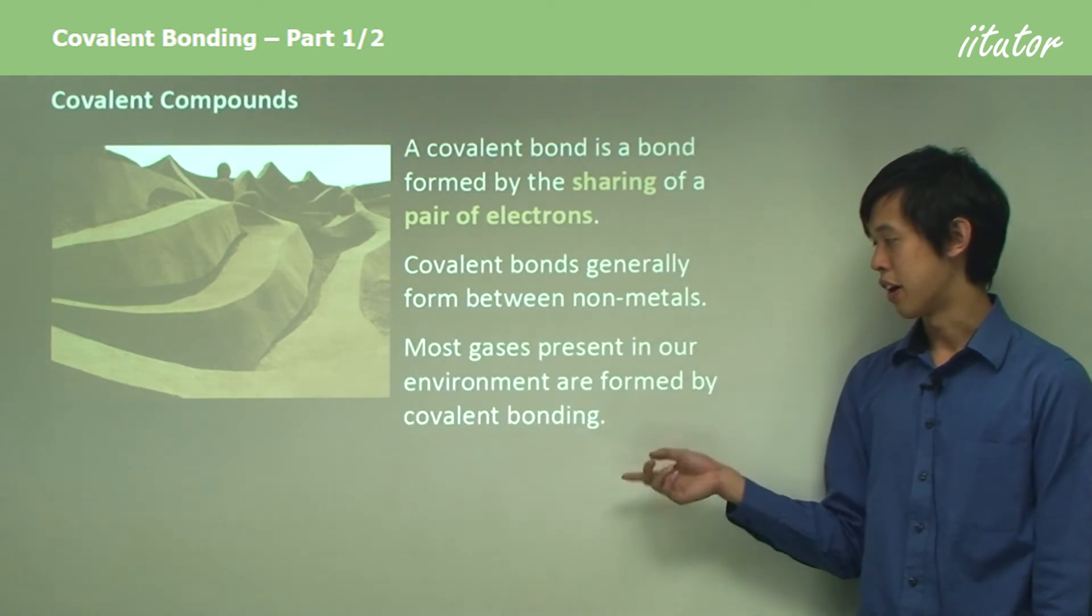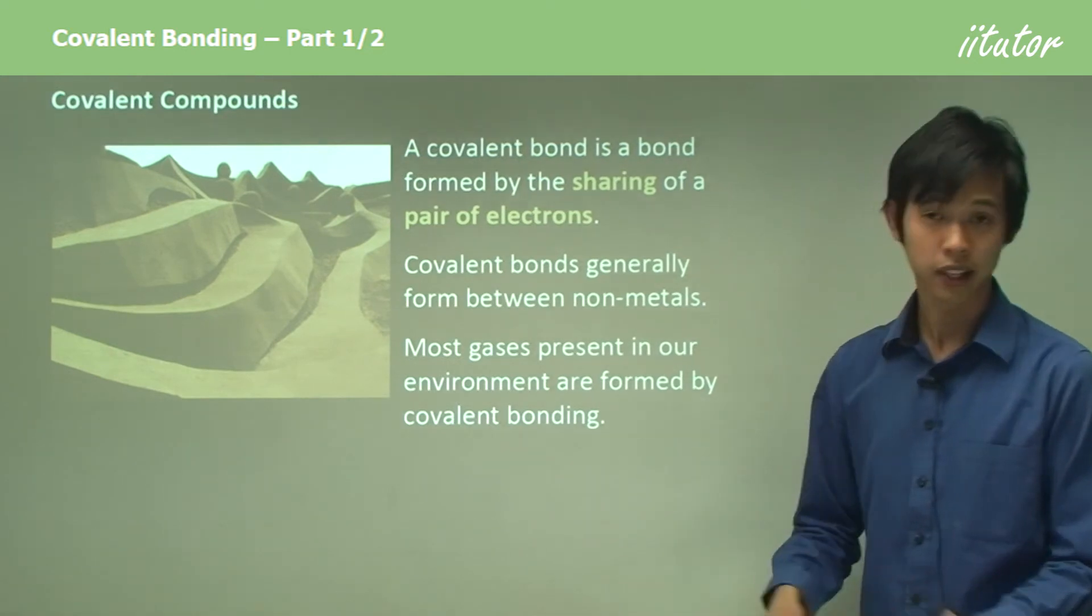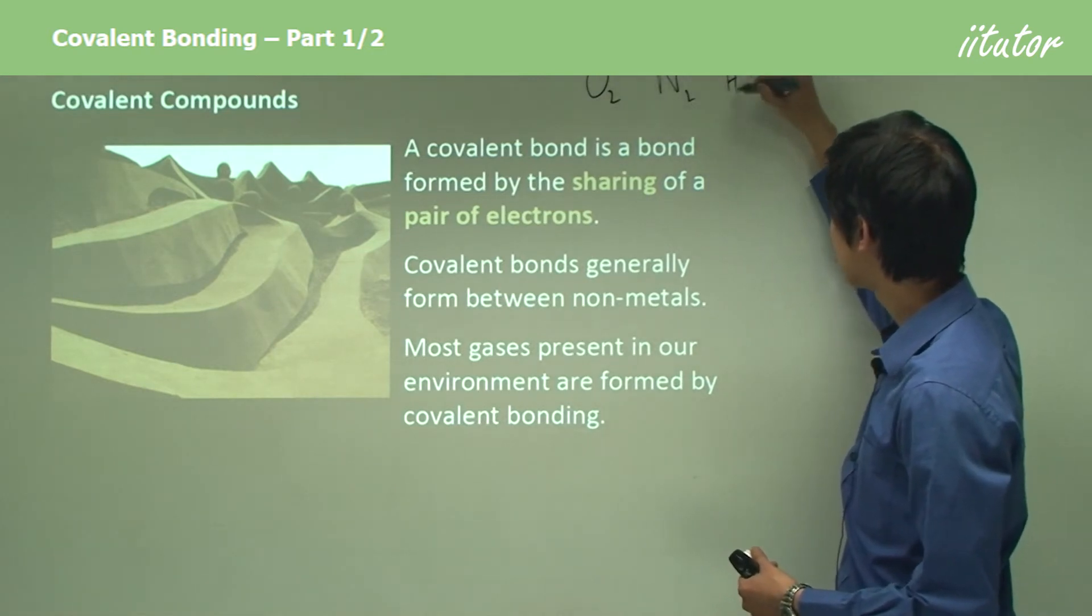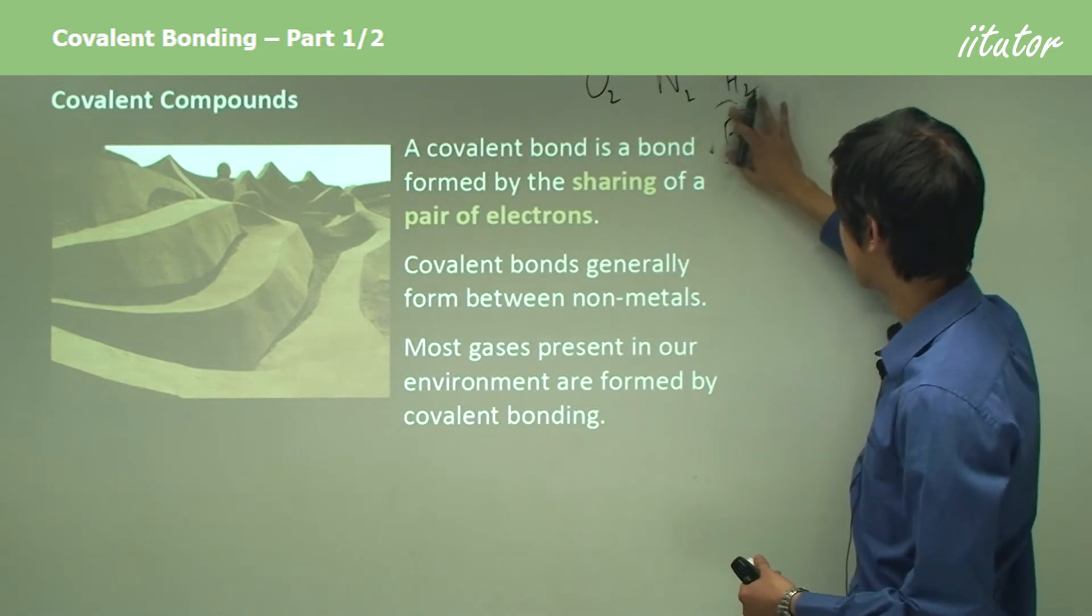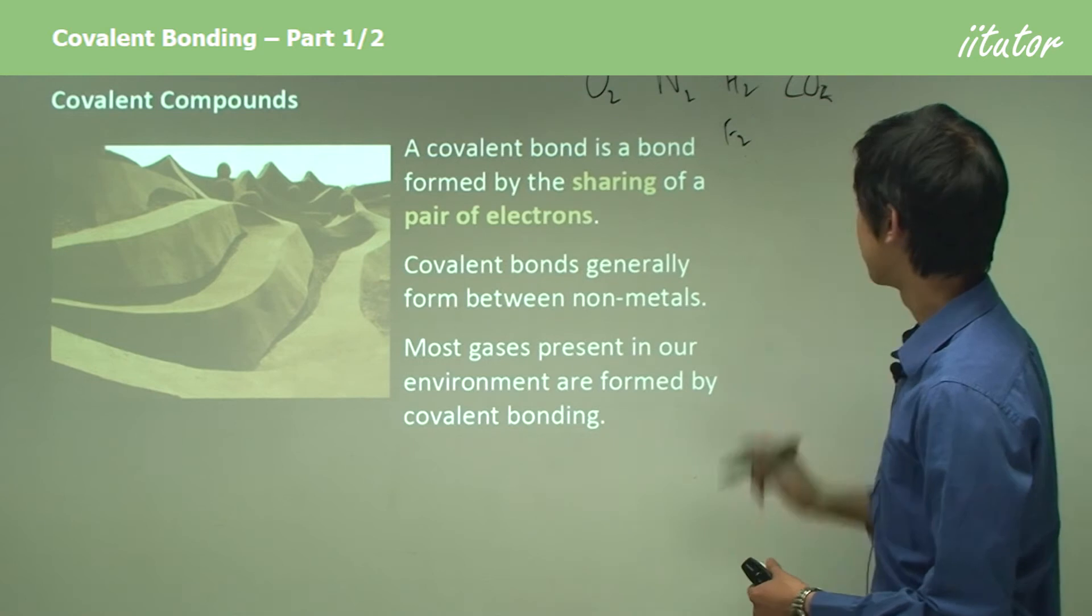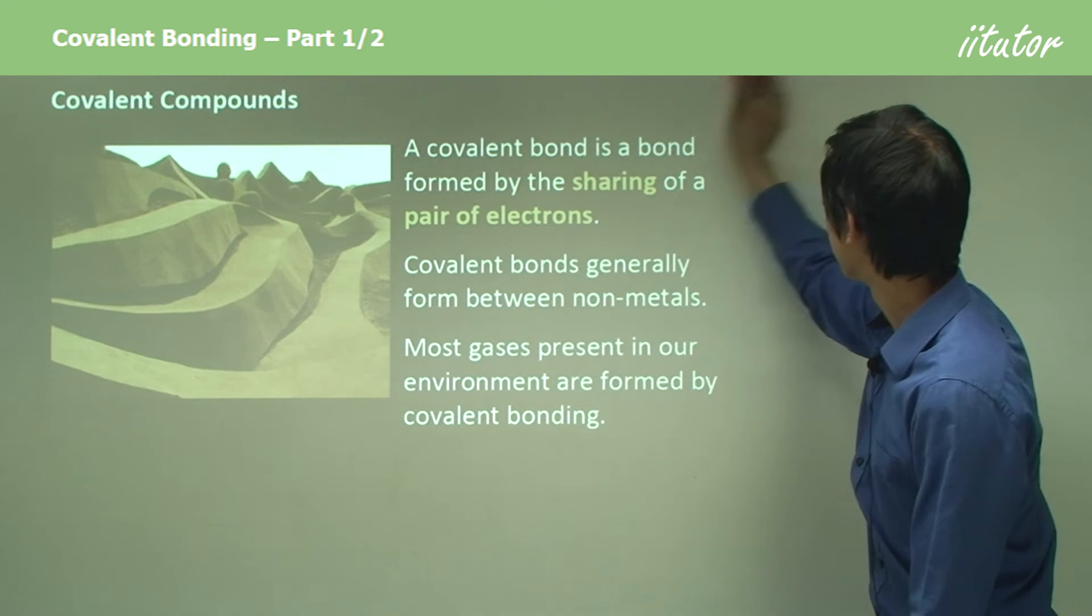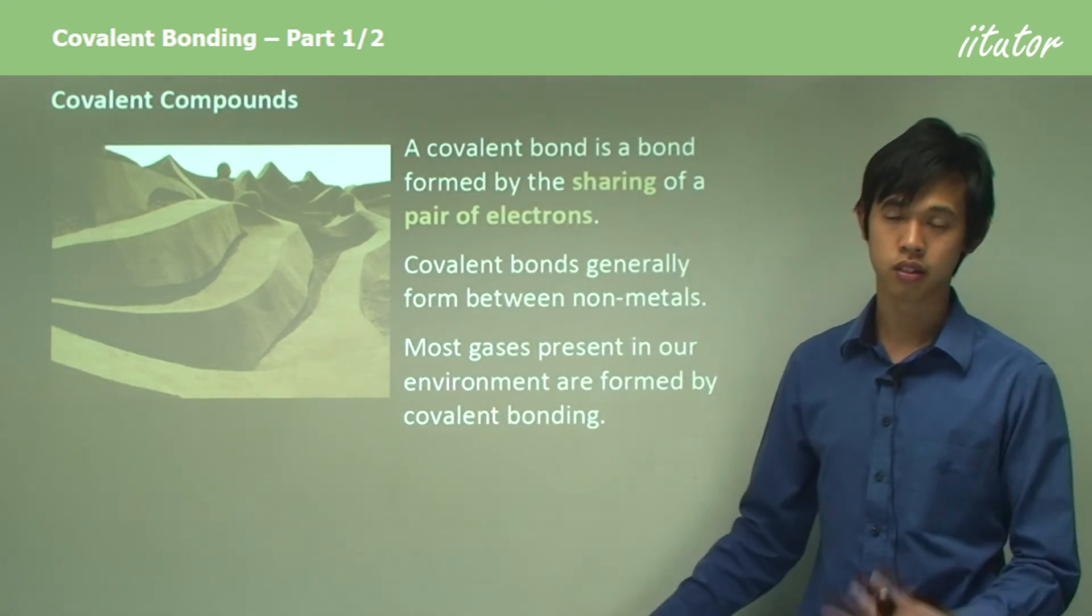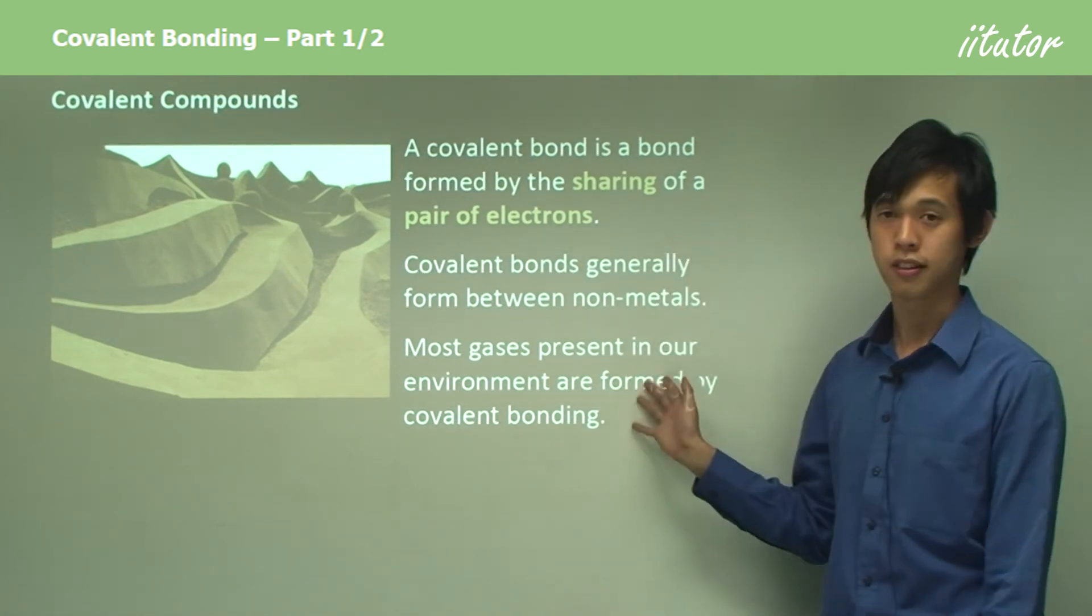Most gases present in our environment are formed by covalent bonding. For instance, think about the gases in the atmosphere. You've got O2, N2, H2, F2—hopefully not this one—but maybe what else do you have in there? CO2. All of these are covalently bonded substances. You can see that they're also non-metals. Oxygen, nitrogen, carbon, fluorine, they're all non-metals. So that fits our little statements here.